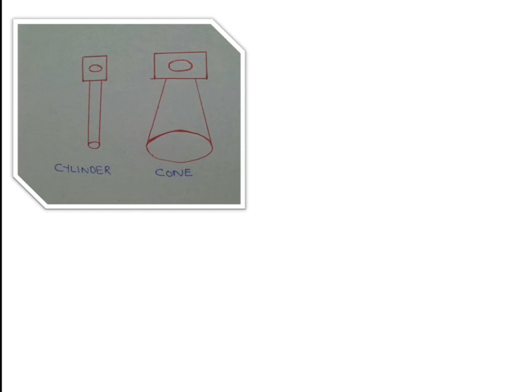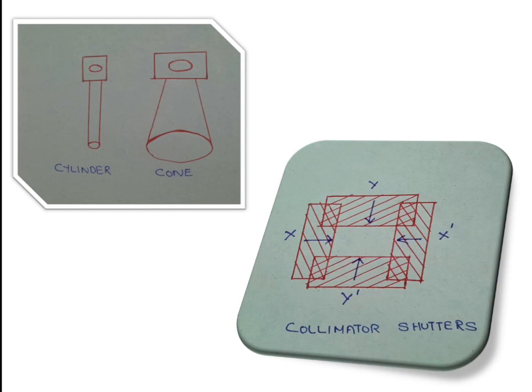Cylinders and cones are used in dental radiography and for skull radiography — specifically for x-ray examination of the mastoids, cones are used. For dental radiography we need to cover only a small area, so cylinders and cones limit the area of exposure to the opening of the cone or cylinder, ensuring other body parts are not unnecessarily exposed. The collimator has four shutters: Y, Y-dash, X, and X-dash.